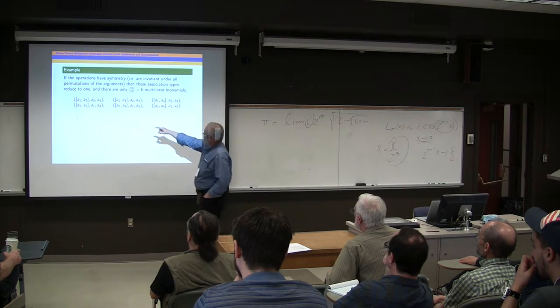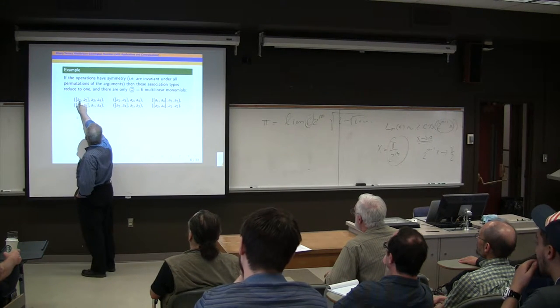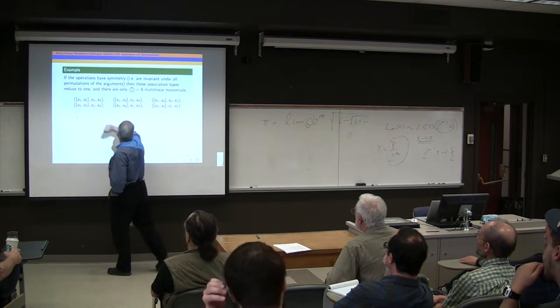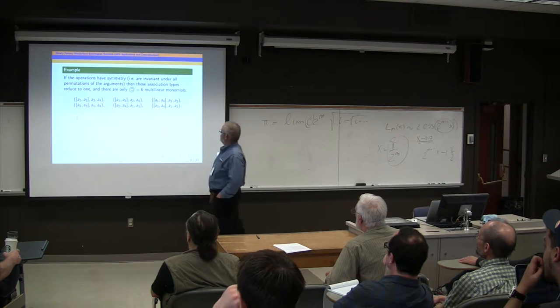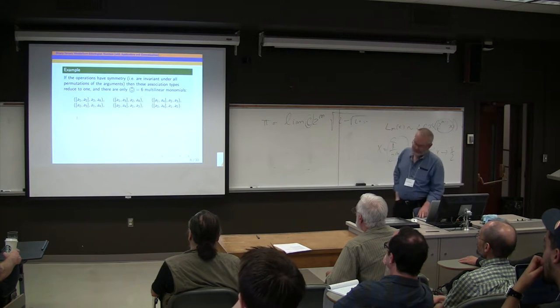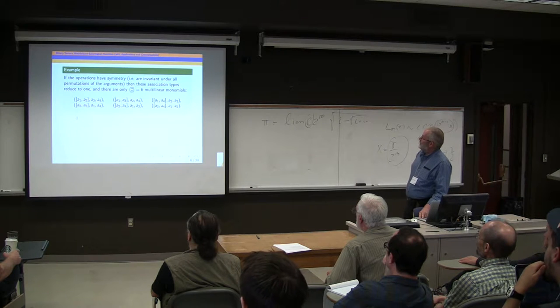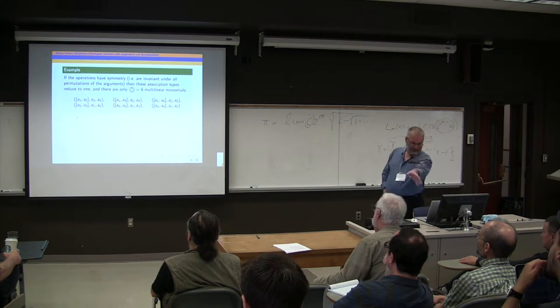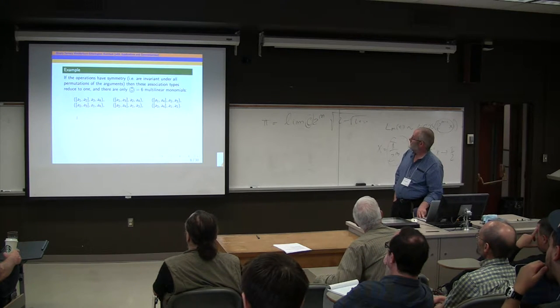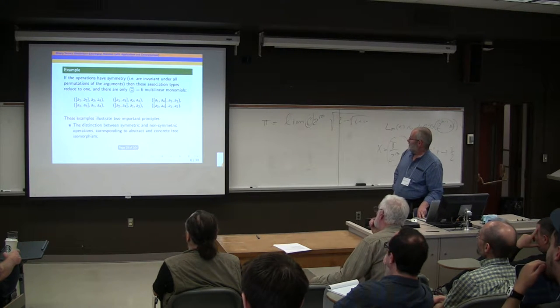Well, if the operations have symmetry, then we only get one association type, because we can always move the binary product to the leftmost position, the first position. And we can assume that the two arguments of the binary operation, the subscripts are increasing, and the other two arguments of the ternary operation and subscripts are increasing. So we only get four choose two, which is six multilinear monomials there, when we're talking about symmetric operations. So there's a big drop from non-symmetric, you have 72, to symmetric, you have only six.